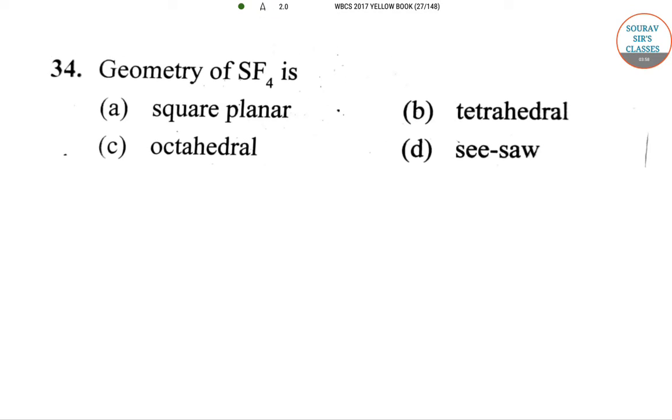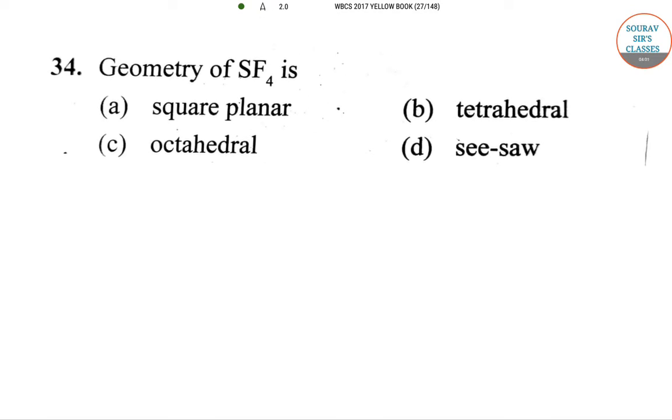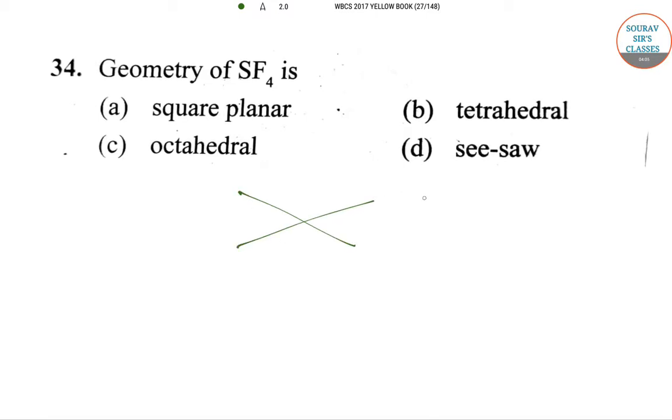Question 34: Geometry of SF4. This actually looks like a see-saw structure, a see-saw pattern with one lone pair and four bonds around sulfur. Hence it is actually a trigonal bipyramidal structure or see-saw shape.